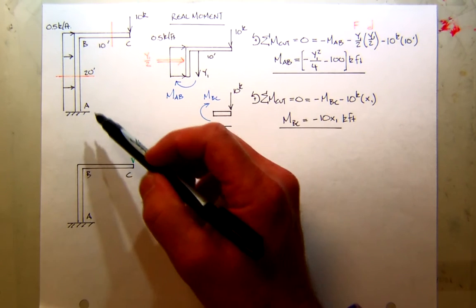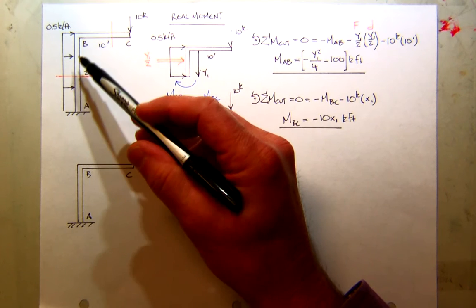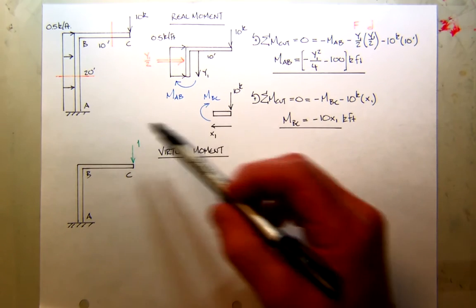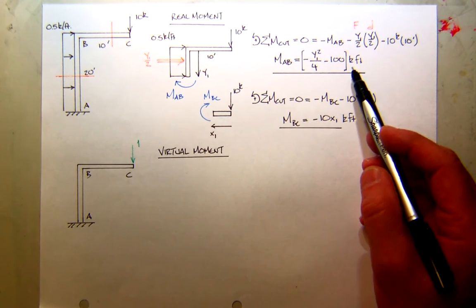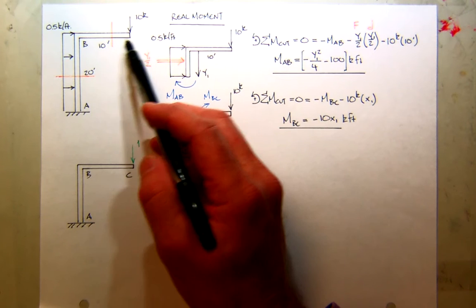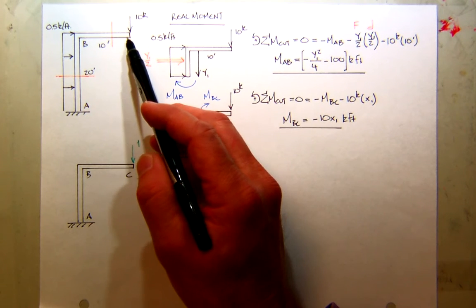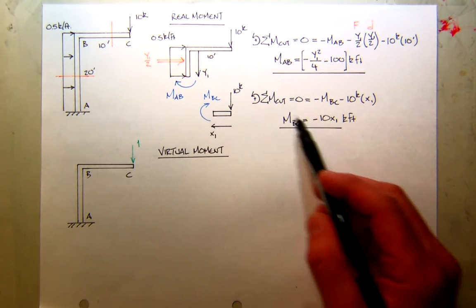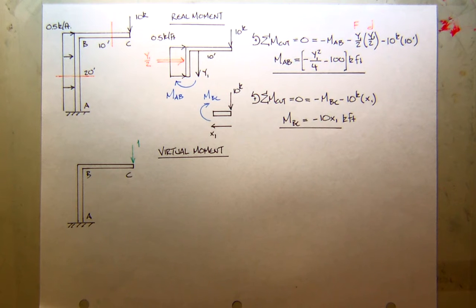So we went ahead and looked at it, and we found that we could write a single moment equation for AB, did that. And then we cut it here in BC, looked at just the cantilever side, the right side, and we wrote a moment expression for that.